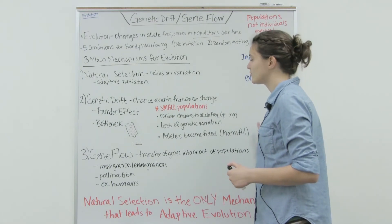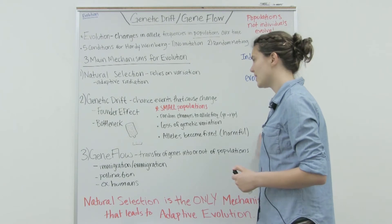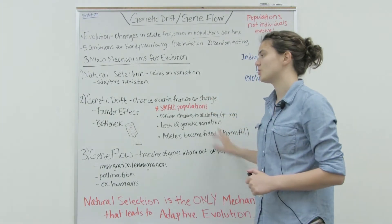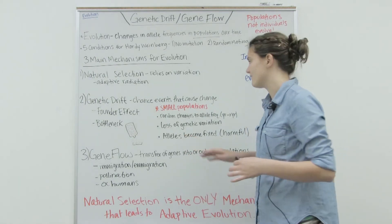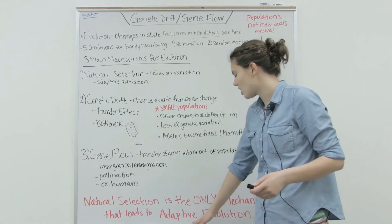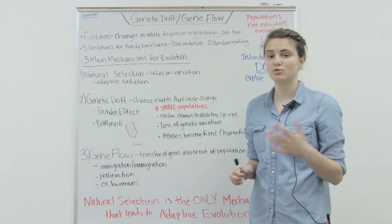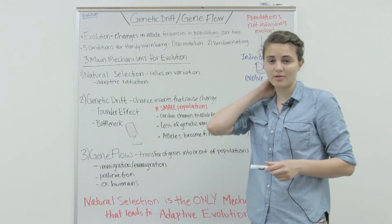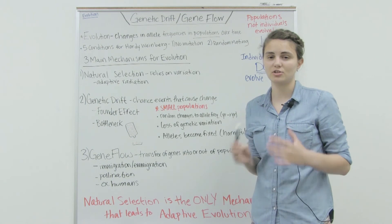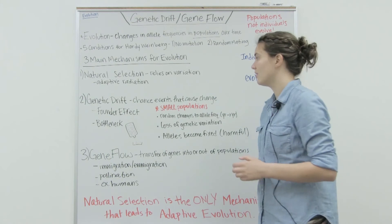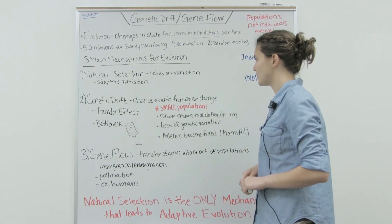Natural selection is still going to be acting on these and determining which individuals will then survive. It causes adaptive evolution - populations adapting to their environment and to their circumstances to survive and be able to continue producing generations of offspring.